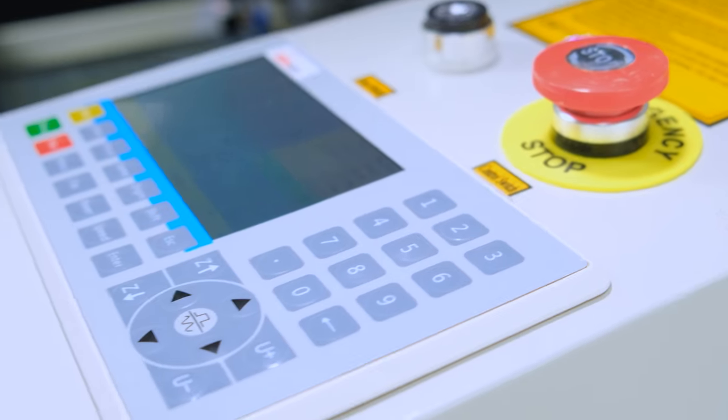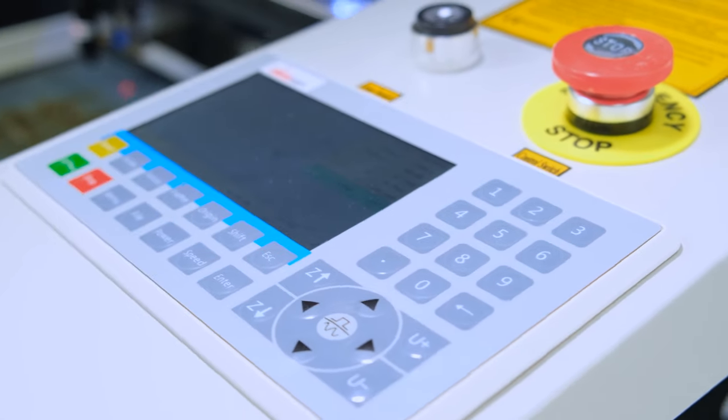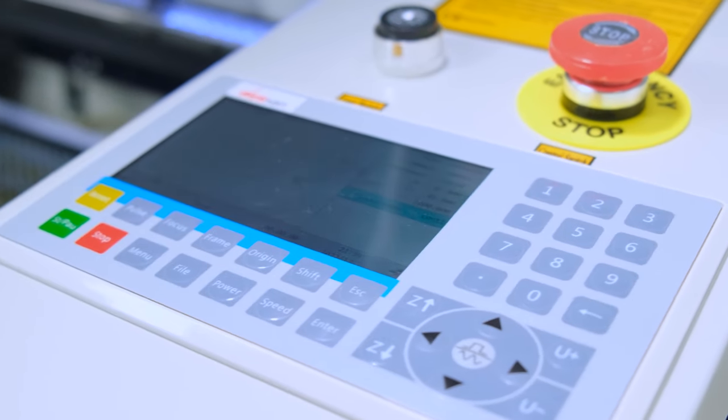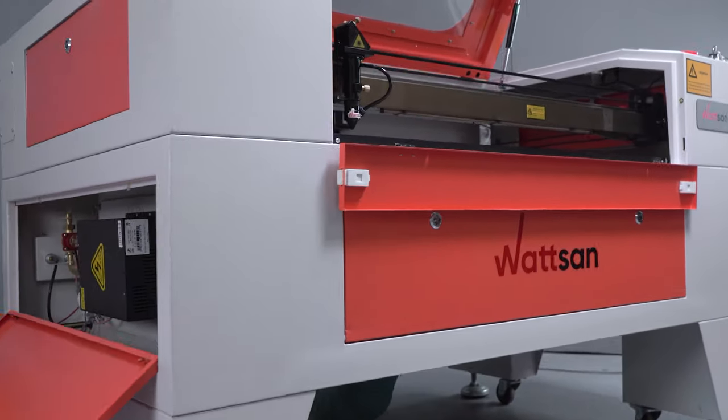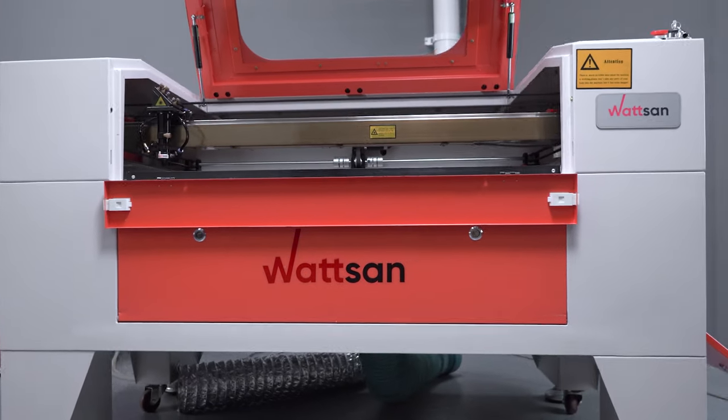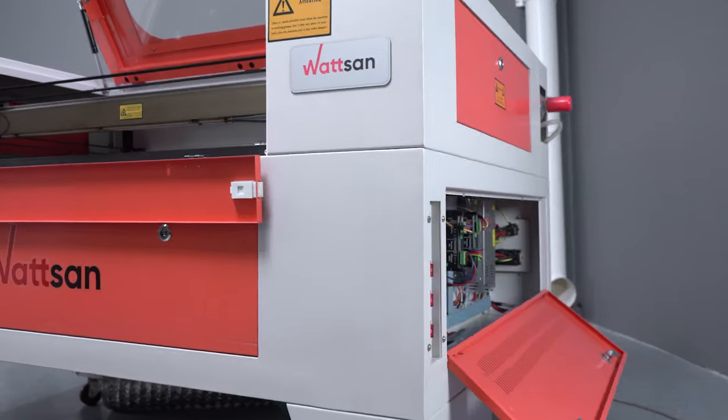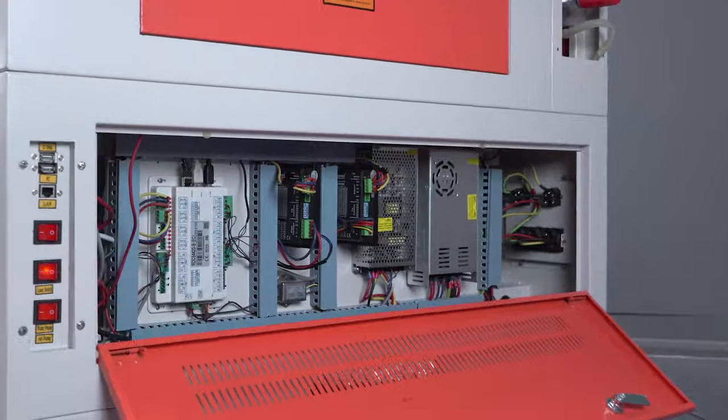The machine housing is equipped with a controller with a display and buttons for setup and control. Please note that the electrical and water conducting systems of Watson laser machines are located on opposite sides of the machine housing. This ensures the safety of its operation.